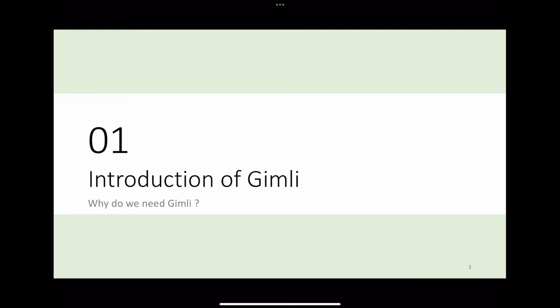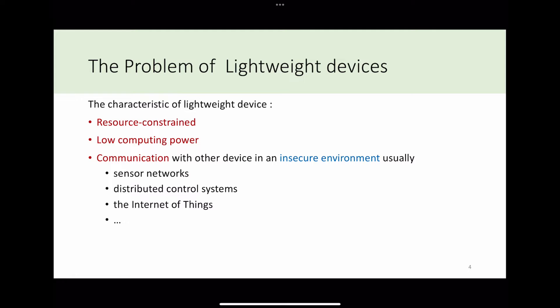There are several standard cryptographic reasons. Why do we need Gimli? First, we talk about the problem of lightweight devices. Lightweight devices have several characteristics: resource constraints, low computing power, and communicate with other devices. For example, sensor networks, distributed control net systems, and the Internet of Things. However, the majority of current cryptography equations are designed for desktop or server. Therefore, we need a cryptographic algorithm which is suitable for implementing on every platform.